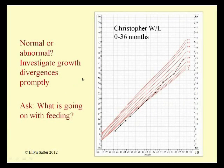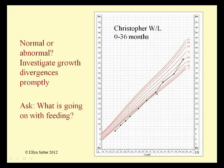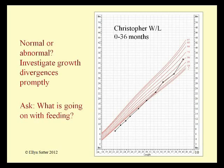Sometimes growth divergence is not so easy to detect. Christopher's weight for length was gradually and smoothly sneaking up on the mean, and he was showing evidence of good internal regulation. But then it quickly crossed two percentiles, leveled off, and began accelerating again. To detect the difference between normal and abnormal growth, we have to find out what's going on with feeding by asking those feeding questions I showed you last time.